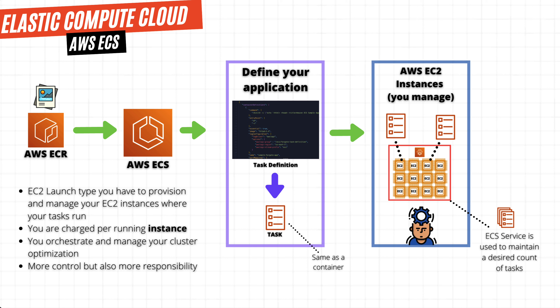Each task is a container, and each task is defined by a task definition. A task definition is required to run Docker containers in ECS. It basically defines the parameters you need to create a task, and these tasks will run on your EC2 instances.